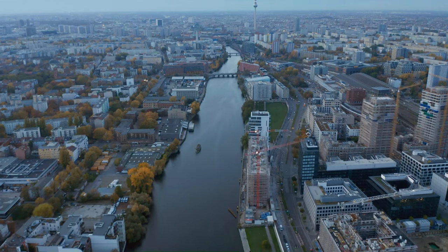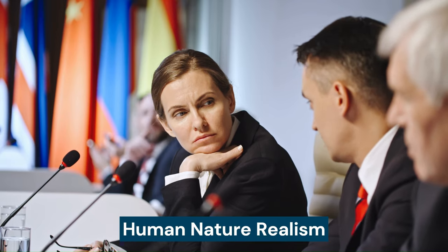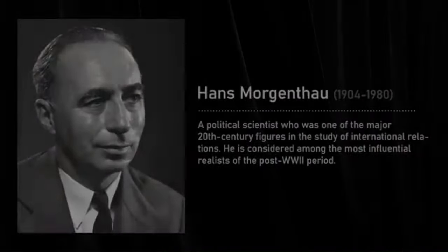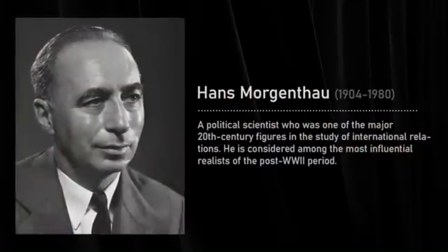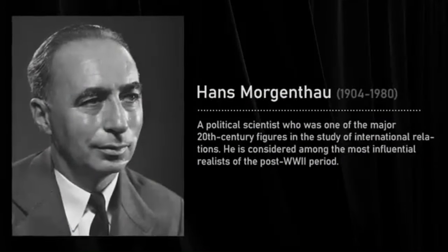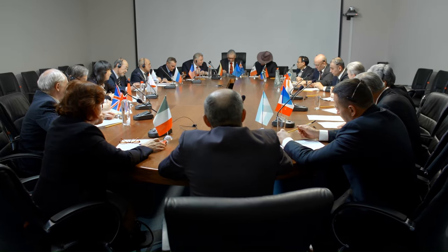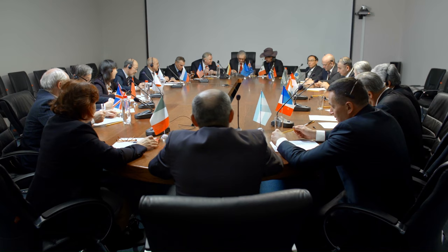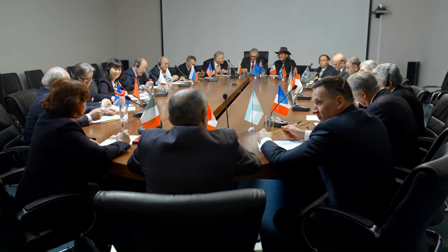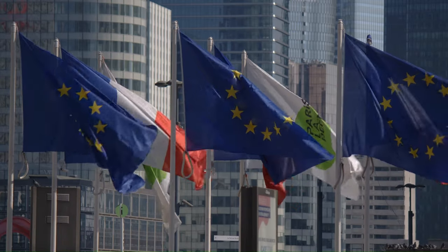In the world of realism, there are basically two sets of theories: human nature realist theories and structural realist theories. The human nature realists — Hans Morgenthau being the most prominent example — believe that human beings are hardwired with what Morgenthau called Animus Dominandi. In other words, Morgenthau was saying that all human beings are born with a type A personality, and when they get into power, what they want to do is pursue power as an end in itself.